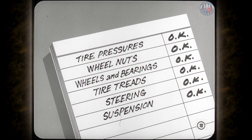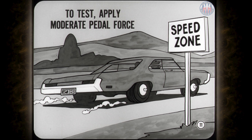Before you take the car out, make sure the tire pressures are correct and that front wheel nuts are properly torqued. Also, raise the car so you can check for bent wheels, improper bearing adjustment, or irregular tire treads. Steering and suspension parts should be in good condition. To test for chatter, speed the car up above 60 on a smooth stretch of pavement, then apply moderate brake pedal force, as you would when slowing down for traffic or when entering a speed zone.